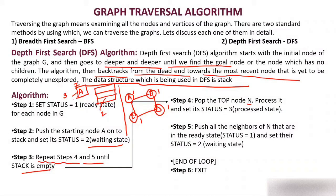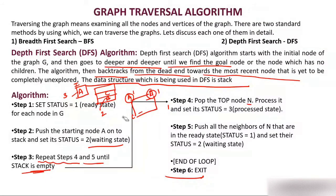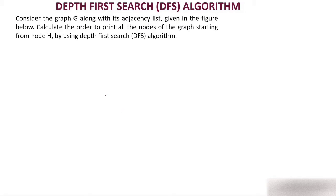In step 5, push all the neighbors of N — that is, all the neighbors of A, which are B and C — onto the stack. Now their status becomes 2. Keep repeating steps 4 and 5 until the stack is empty. The final step is exit. This is the simplest algorithm in all of data structure.